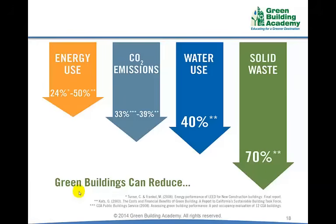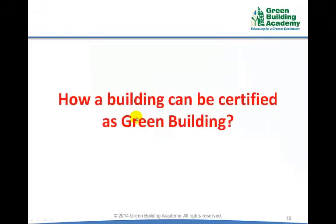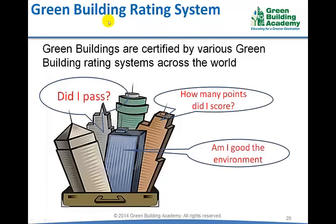According to the US Green Building Council, green buildings can reduce energy consumption up to 50%, reduce water consumption up to 40%, reduce solid waste generation up to 70%, and hence CO2 emissions can be reduced up to 39%. Buildings are certified as green buildings by various green building rating systems. These are tools which assess the building on various aspects like energy efficiency, water efficiency, materials used, location, and certify the buildings if they qualify the preset criteria.